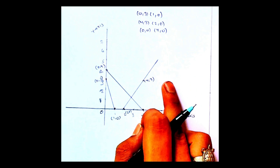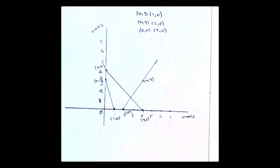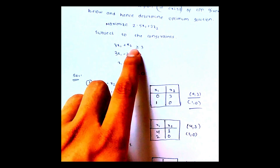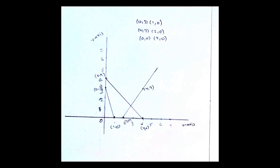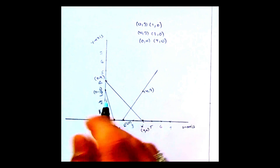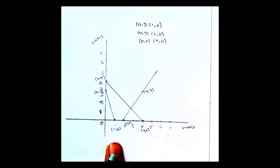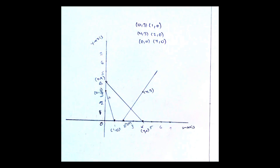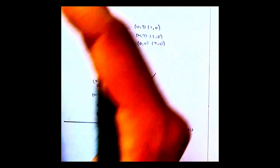Now we have to check the feasible region. Let us check the symbols. The first equation is greater than or equal to 3. That means the upside of the line — greater than symbol means this side, the upside of the line.